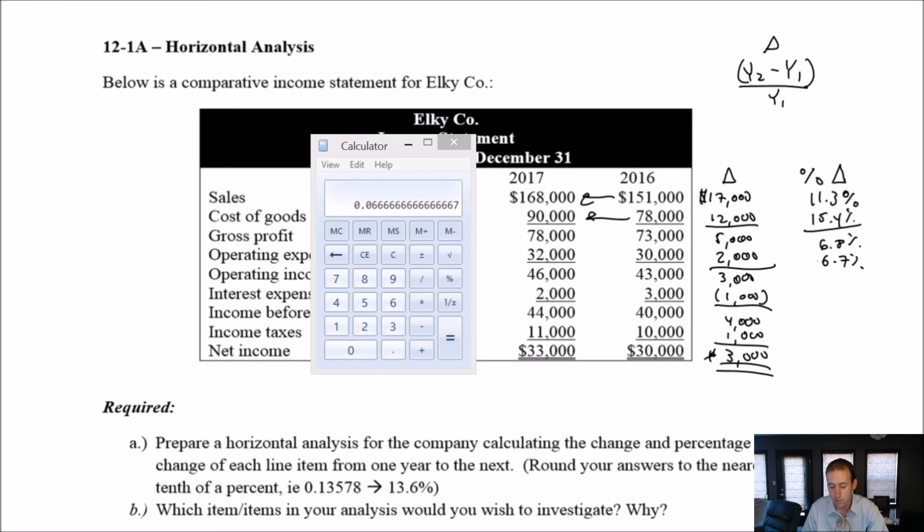Operating income grew from 43 to 46. So 3,000 was the change and we divide by our earlier year. It grew by 6.98%, which rounds to 7%. Interest expense shrunk by $1,000. It shrunk by 33.3%. You might say, well, wait a minute, this is the biggest number. It's the only one that's negative. This is the one I should look at because the 33 is bigger than 15 and it's the only one that's negative. Well, we're dealing in a small number here.